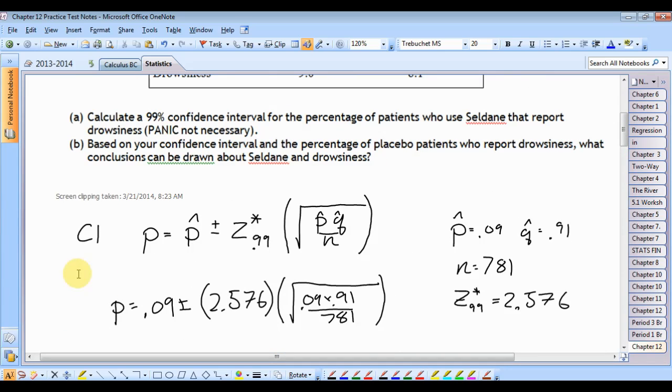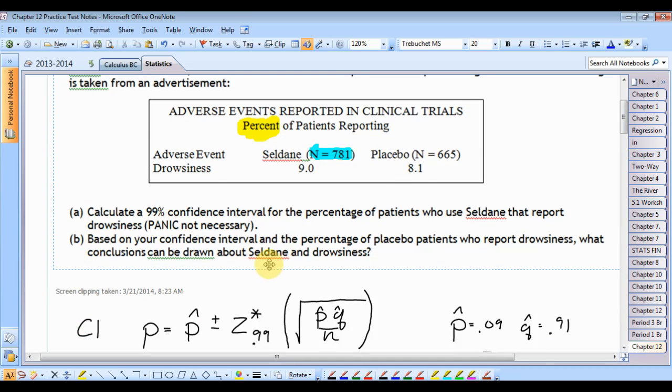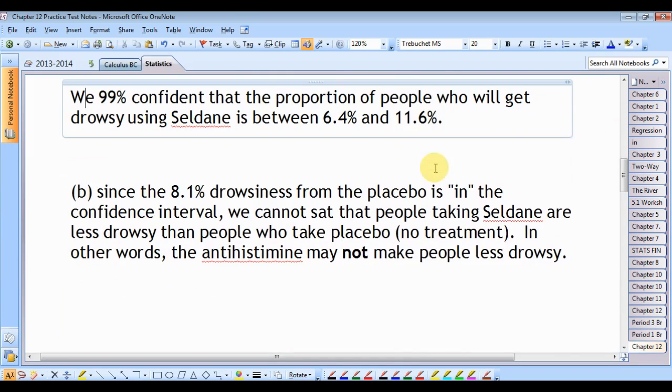Part B. Based on the confidence interval and the percentage of placebo patients who report drowsiness, what conclusions can be drawn? Well, the placebo produced an 8.1% drowsiness. In other words, if you're not taking any medication, then 8.1% of the people not taking any medication report drowsiness. 8.1% is in the confidence interval. That's always what you want to look for. Is the other number inside our confidence interval? And it is. So that means that we can't say for sure that the people taking Seldane are less drowsy than the people not taking Seldane.